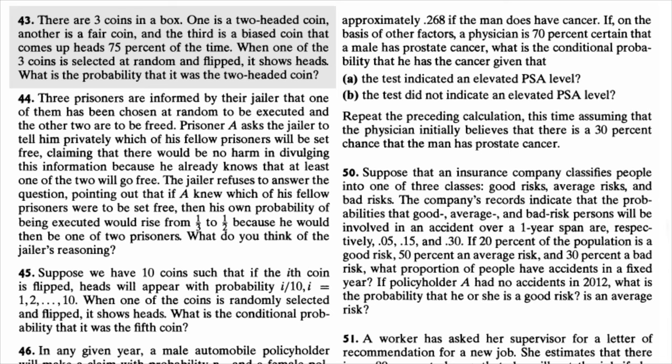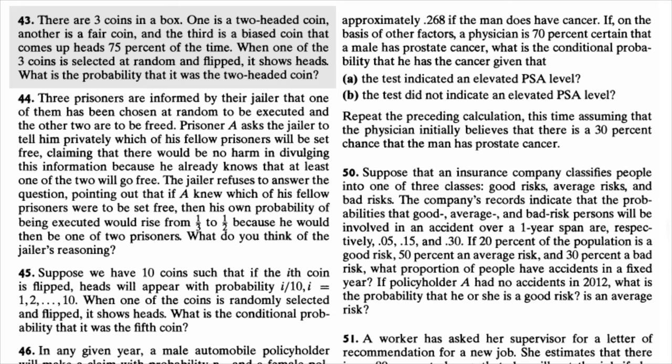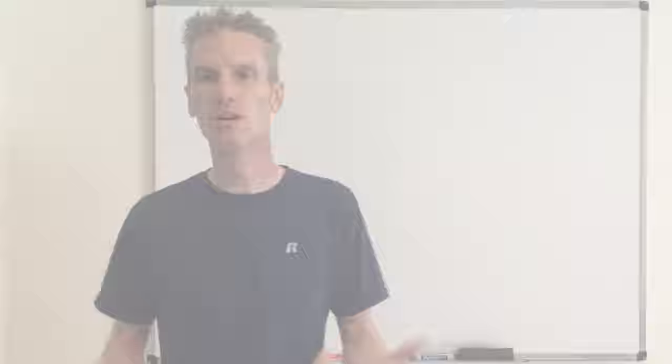So in this problem, we assume that we have three coins. The first one is a two-headed coin. The second one is a fair coin. The third one is a biased coin that comes up heads with probability three-fourths. The experiment is to select one of the coins at random. We want to find the probability that this was the two-headed coin given that after we flip the coin, we get heads.